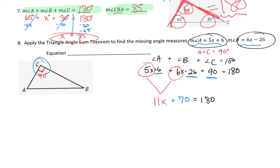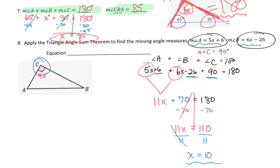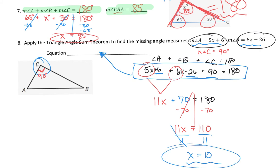This is a two-step equation. Subtract 70 on both sides — 11x equals 110. Divide by 11 to get x by itself, and x equals 10. Now that we know x equals 10, I can go back and plug that in. Since angle A was 5x plus 6, that's 5 times 10 plus 6, which is 50 plus 6, so angle A is 56 degrees.